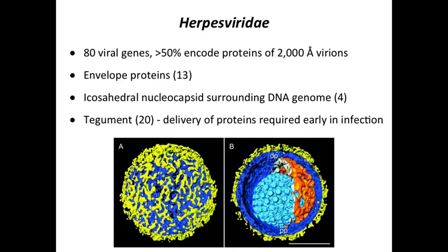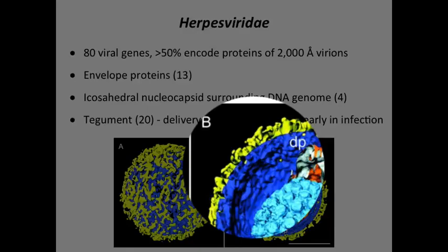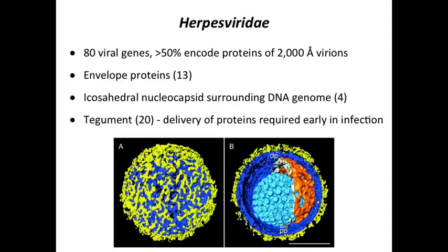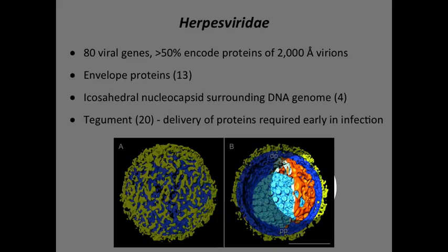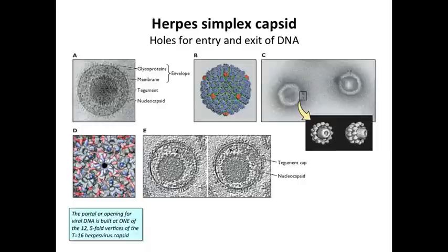Let's look at one other large virus to give you a sense of how these are built — herpes viruses. Herpes viruses have about 80 viral genes encoded in their DNA genomes, and over half of them go towards building the capsid. The capsid is 2,000 angstroms in diameter and contains 13 envelope proteins. There are four proteins that make up the icosahedral capsid, and then there's what's called a tegument made up of 20 proteins, which sits between the envelope and the icosahedron. You can see the icosahedral capsid in light blue in this cryo-EM reconstruction, an envelope surrounding it in dark blue with glycoproteins, and the orange tegument layer.